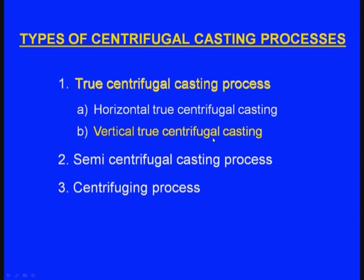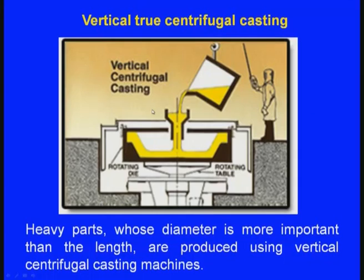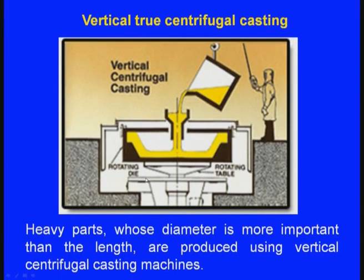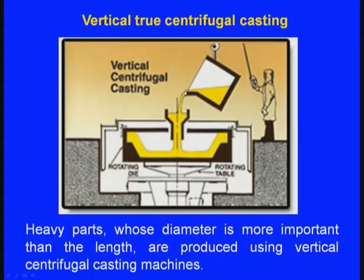Now let us see the vertical true centrifugal casting process. This is used for heavy parts whose diameter is more important than the length. The principle is the same — there is a cylindrical mould that rotates — but here the diameter is more important than the length. The molten metal is poured as the mould rotates, and this rotation continues until the molten metal solidifies inside the metallic mould.